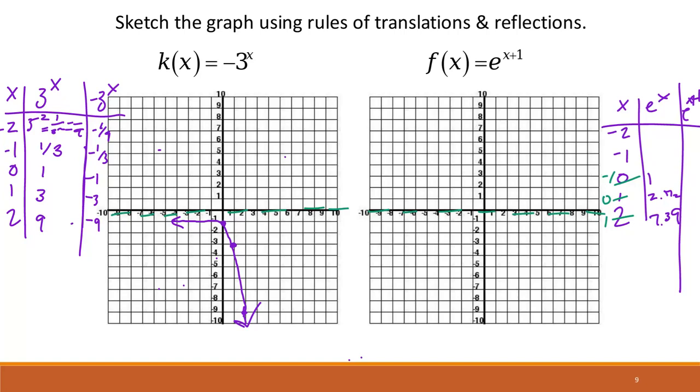So now my points are negative 1, 1, 0, 2.7, right? So it's something like that.